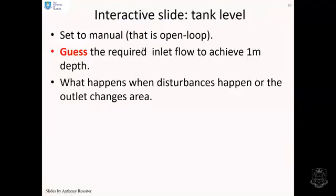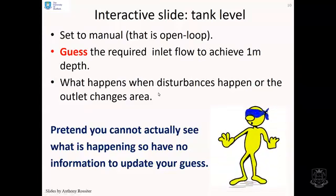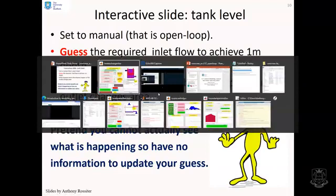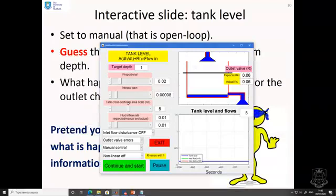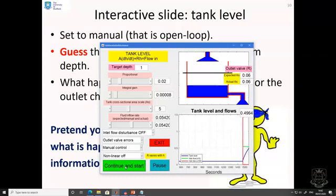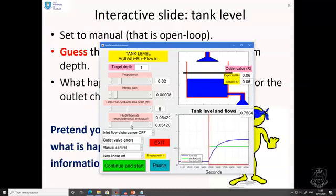OK, next example, tank level. We want to guess the required inlet flow to achieve one metre depth. And again, we're going to ask ourselves, what happens when disturbances happen? Pretend you cannot actually see what's happening. So you've got no information to update your guess. So if we can find the tank, here it is. We're going to make a guess. Let's guess the fluid flow should be somewhere about here. I've just made a guess, I've got no clue if that'll work. Now I'm going to press continue. So are we going to get to the right depth? You can see the tank's filling up, but it seems to be slowing down. In reality, we can't actually see what's happening, but what you can observe is our guess is wrong. And because we've got no observation, we don't know it's wrong. So we've got no way of correcting it.